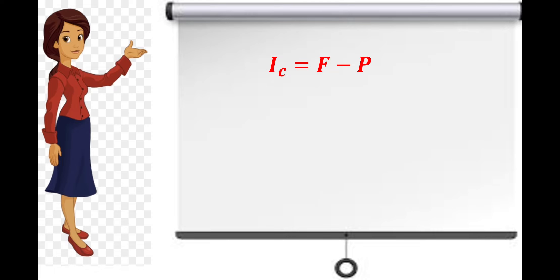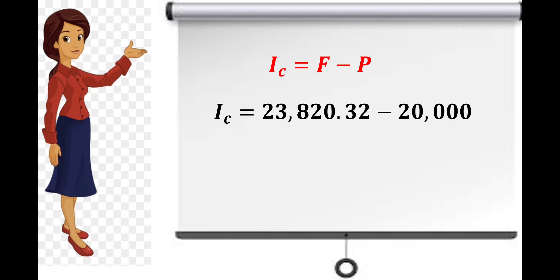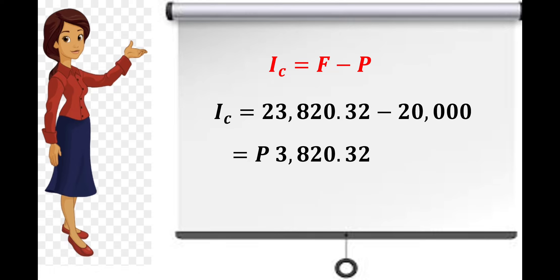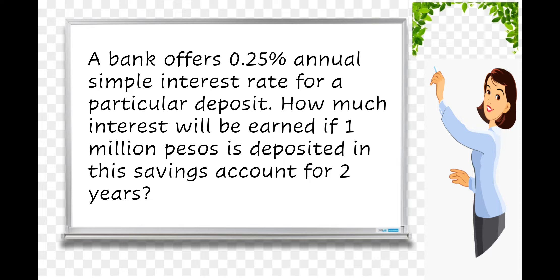To find the compound interest, that is equal to the future value less the principal. The future value is 23,820 pesos and 32 centavos, and the principal is 20,000. Subtracting, we have 3,820.32 pesos. Therefore, this is the compounded interest.